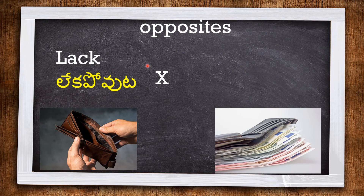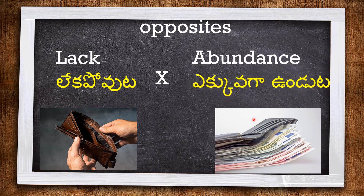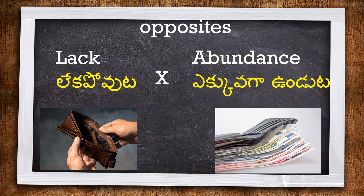LACK means having none of something — this wallet is lacking money. The opposite of lack is ABUNDANCE. Here we can see the abundance of money in the wallet.